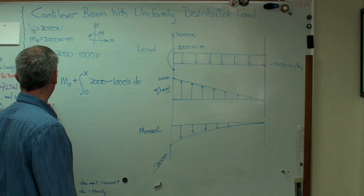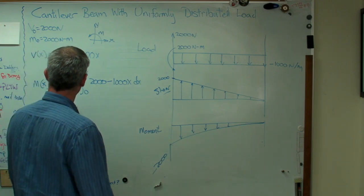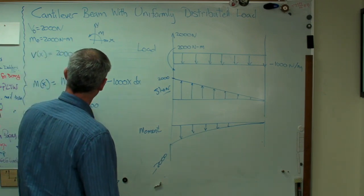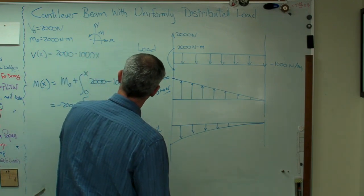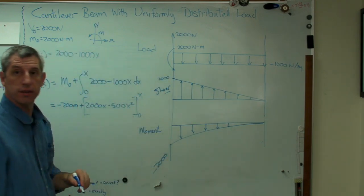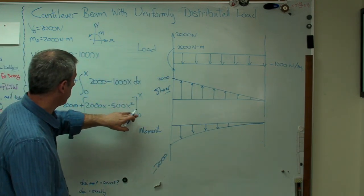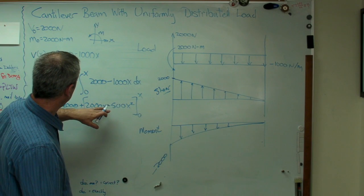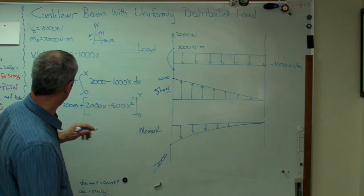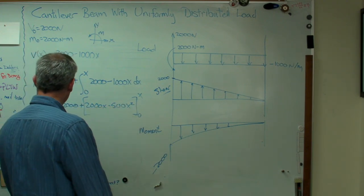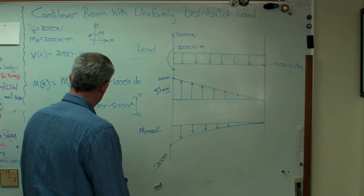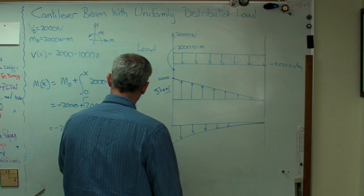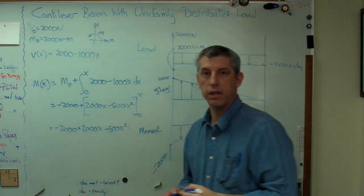Okay. Moment of x is M0, which now is going to be negative, according to the designer sign convention, plus the integral 0 to x of 2,000 minus 1,000x dx. Let's get that out of the way there. Okay. Again, real easy to integrate. So, minus 2,000 plus 2,000x minus 500x squared, evaluated from 0 to x. Okay. Again, because we're subtracting out the second term here, where x equals 0. If you evaluate this, you're going to get that right there.